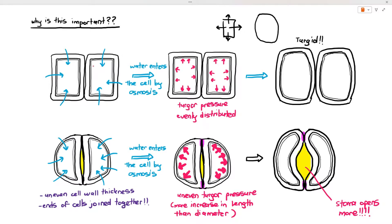That is why the guard cells have that uneven cell wall thickness so that when water enters by osmosis the cells will have an uneven expansion because of the uneven thickness of their cell wall they will have more increase in their length than diameter.